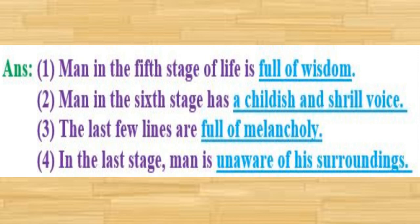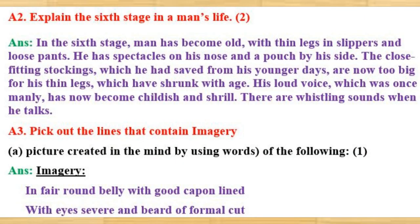Next activity, A2: Explain the sixth stage in a man's life. The answer is: In the sixth stage, man has become old with thin legs, in slippers and loose pants. He has spectacles on his nose and a pouch by his side. The stockings which he had saved from his younger days are now too big for his thin legs, which have shrunk with age. His loud voice, which was once manly, has now become childish and shrill. There are whistling sounds when he talks.